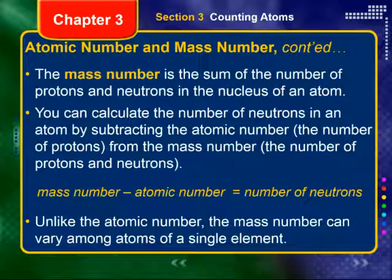The mass number is the sum of the number of protons and neutrons in the nucleus. So atomic number is just the number of protons, while mass number is the number of protons and neutrons. You can calculate the number of neutrons in an atom by subtracting the atomic number from the mass number. Mass number minus atomic number equals number of neutrons.